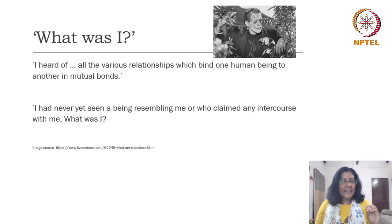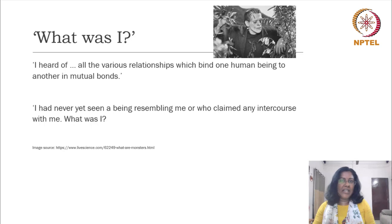He says: 'I have never yet seen a being resembling me who claimed any intercourse with me. What was I?' He says he can't see anybody mirroring him, nobody is keen to have any kind of conversation with him, any kind of relationship with him — what exactly am I? These are the questions that create a lot of poignancy in the novel with relation to this creature.